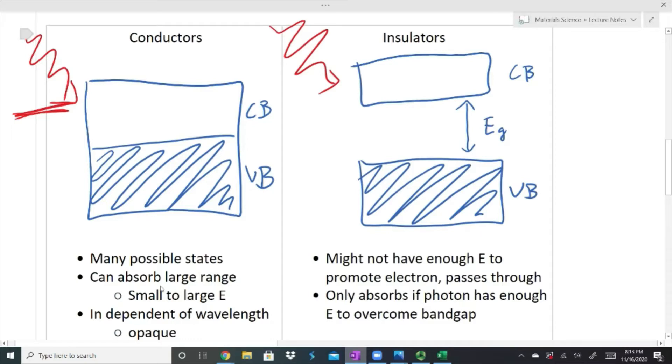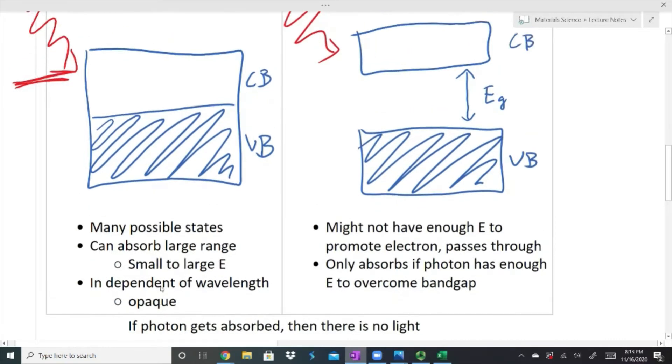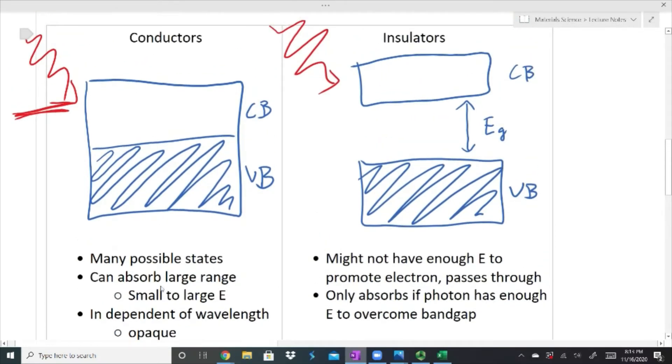With a conductor, this photon can easily be absorbed because there are many possible states that the photon could be in and many possible states which the conductor could absorb from. It can absorb a large range, either a small energy or a large energy, and it's independent of wavelength. So my wavelength could be something really big or something really small. What we notice happens with most things that we consider electrical conductors is they are opaque. You can't see through them, and the reason you can't see through them is because the photon cannot make it through the material because it gets absorbed very easily.